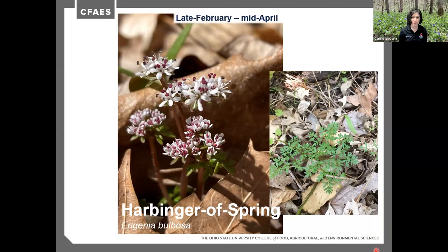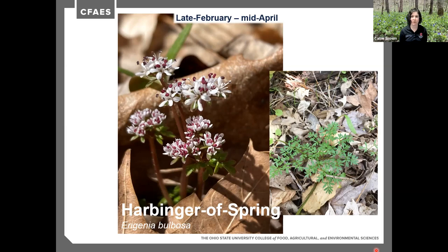Next up is Harbinger of Spring, also known as the salt and pepper plant. It's one of our earliest spring ephemerals, found in rich hardwood forests of eastern North America. A member of the same family as parsley and carrot, its foliage is pinnately divided into small, lacy sections. It's only one to two inches in height — very easy to miss amongst the leaf litter. It has tiny white flowers with striking purple anthers and is a true ephemeral that withers away quickly after flowering. It relies on tiny native bees and flies for pollination.